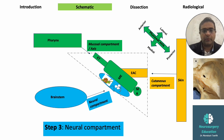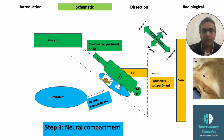The third compartment is the neural compartment, or the inner ear. It lies medial to the middle ear, inside hard bone called the otic capsule. It is divided by the internal auditory canal — triangular in shape — into anterior and posterior labyrinth. The anterior labyrinth is the cochlea. The posterior labyrinth is made of the vestibule connected to three semicircular canals. The neural compartment is connected to the brain stem by the facial and vestibulocochlear nerves through the posterior petrous surface.